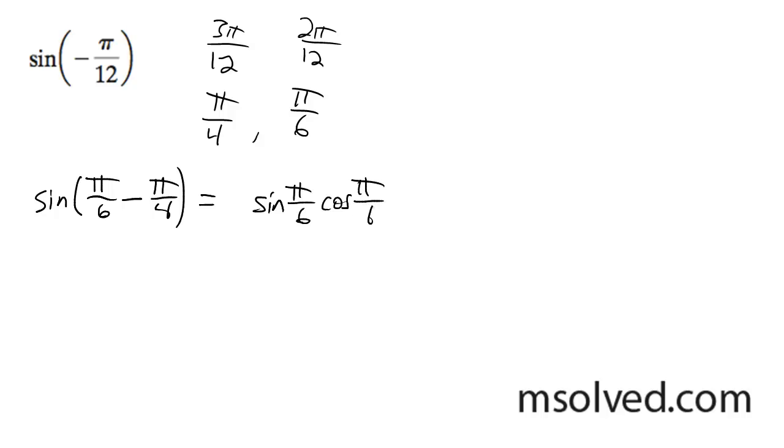Times the cosine of pi over 4, minus the sine of pi over 4 times the cosine of pi over 6.